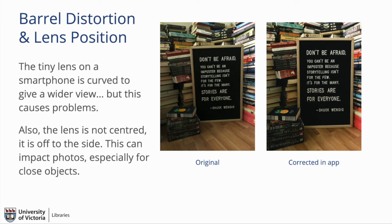Barrel distortion is created because lenses are curved, and the more curved they are, the more apparent it becomes. You notice this most with fisheye lenses — like looking through a peephole in a hotel door, where faces appear very distorted. On a smartphone, because the lenses are tiny and designed to be wide-angle, you can really see barrel distortion when photographing something close up. It can cause straight lines to appear curved, buildings to look warped or leaning, and objects or people at the edges of photos to appear bigger or more stretched out than they are.